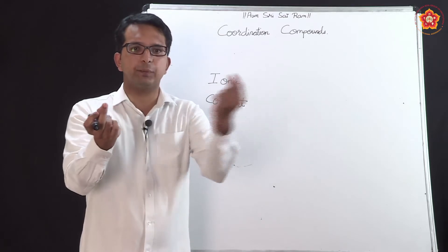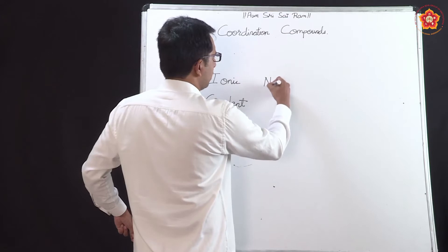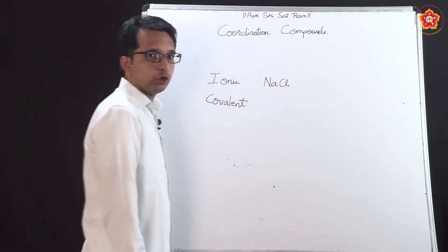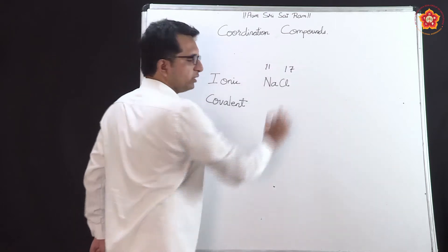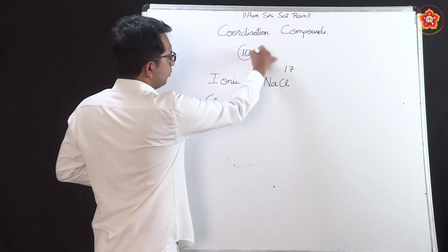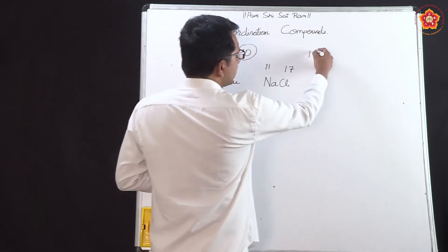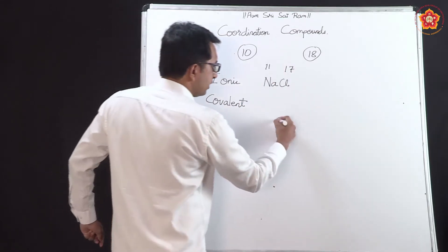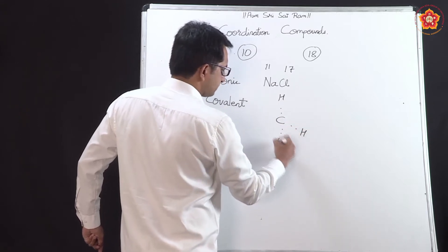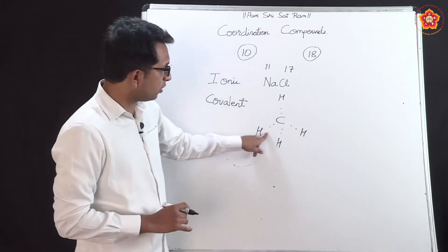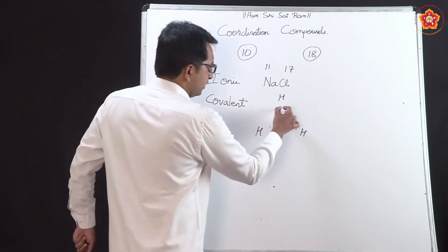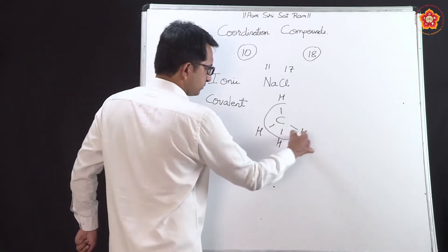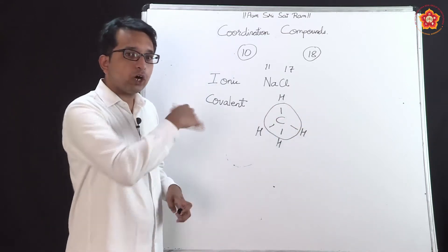Whereas in covalent bonding it was about sharing of electrons — one atom gave one electron, another gave another electron. As an example, take a simple compound like NaCl, table salt sodium chloride, where sodium gives away one electron to chlorine. The atomic number of sodium is 11 and chlorine is 17. If sodium loses one electron it becomes like a noble gas of atomic number 10, and chlorine gaining one electron becomes a noble gas of atomic number 18. In methane, each bond has two electrons where one electron is given by carbon and the other by hydrogen, forming an octet structure and retaining stability.